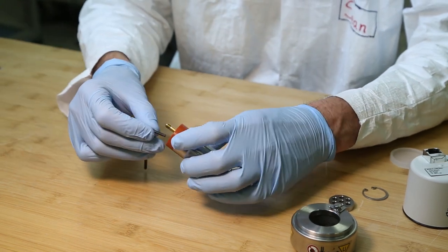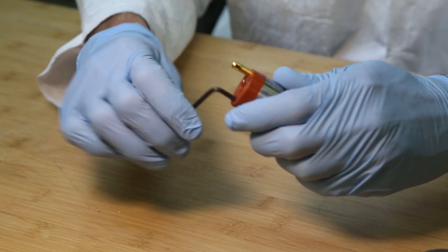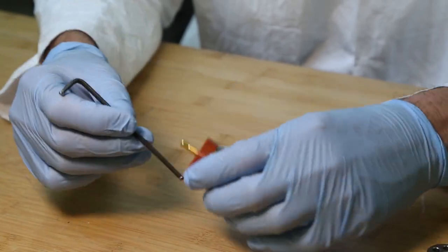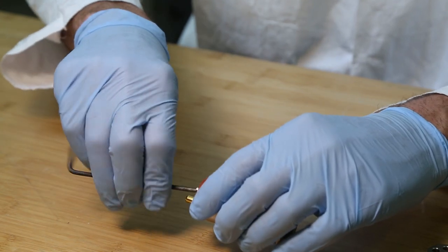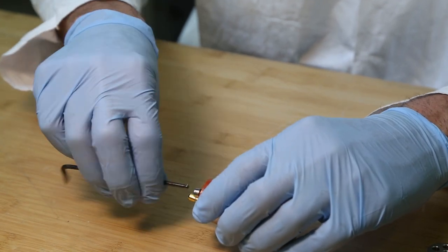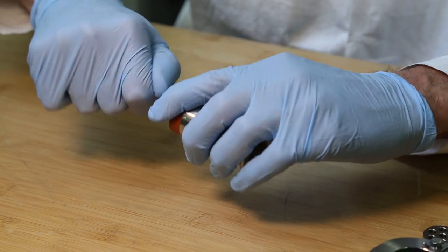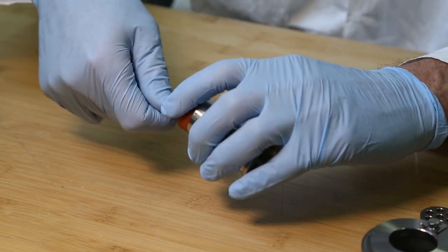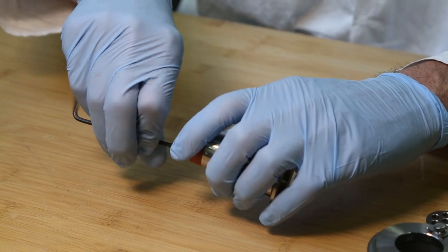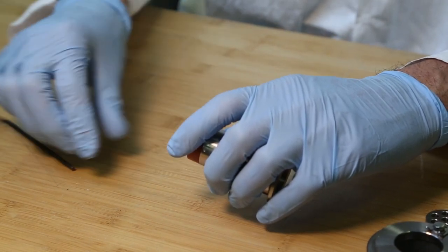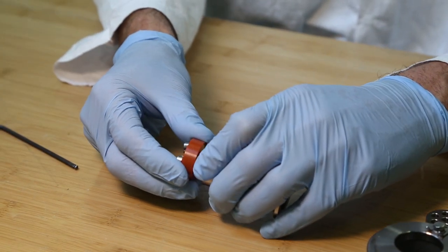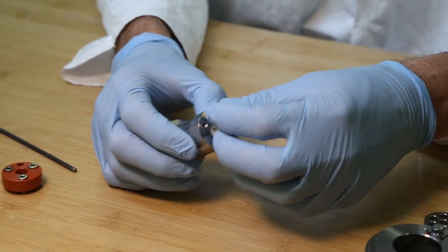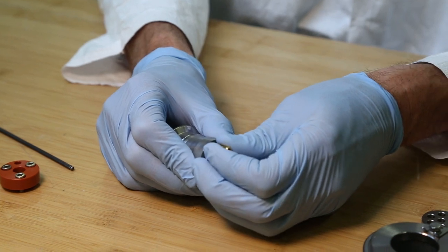We're going to remove the orange cap. There's three screws here. Take the orange cap off. So we have, in this case, the Pirani tube just pulls out. There's an O-ring there.